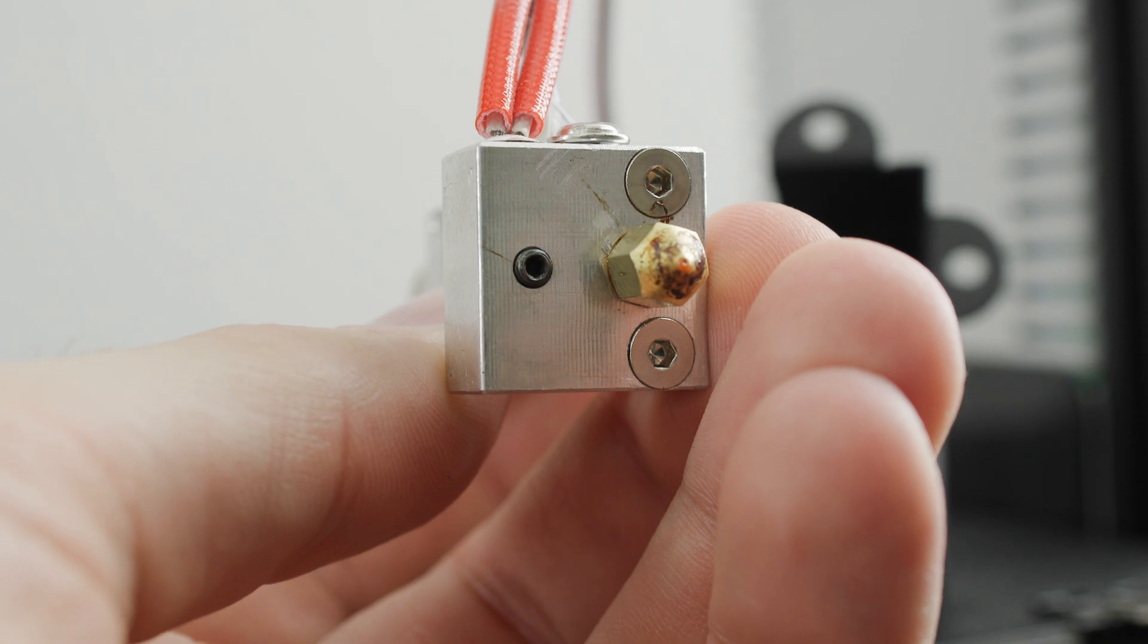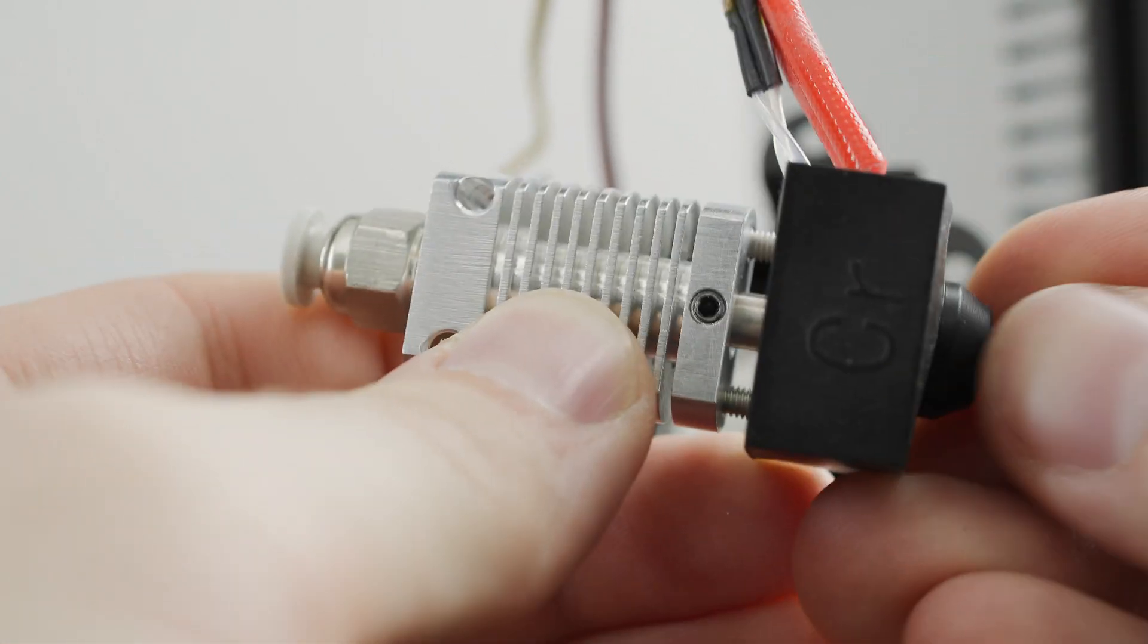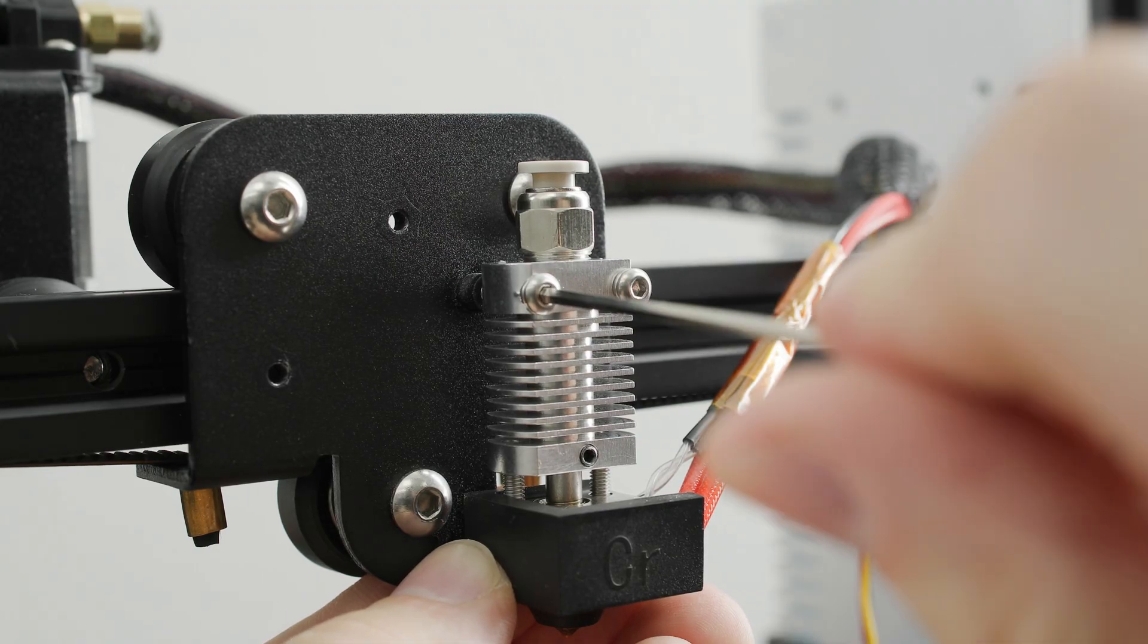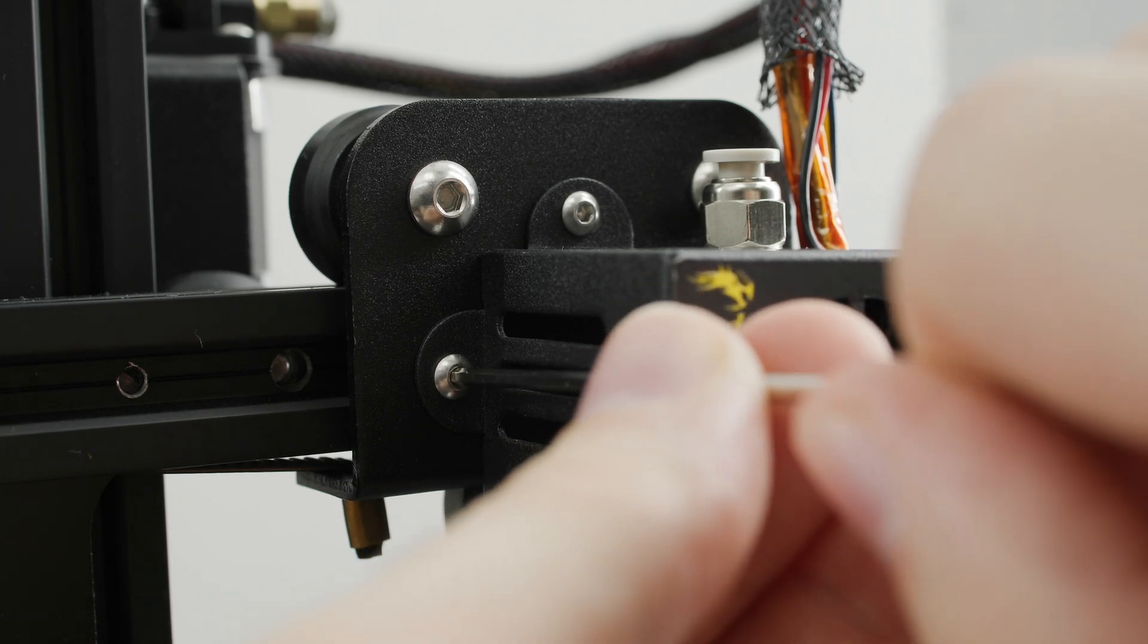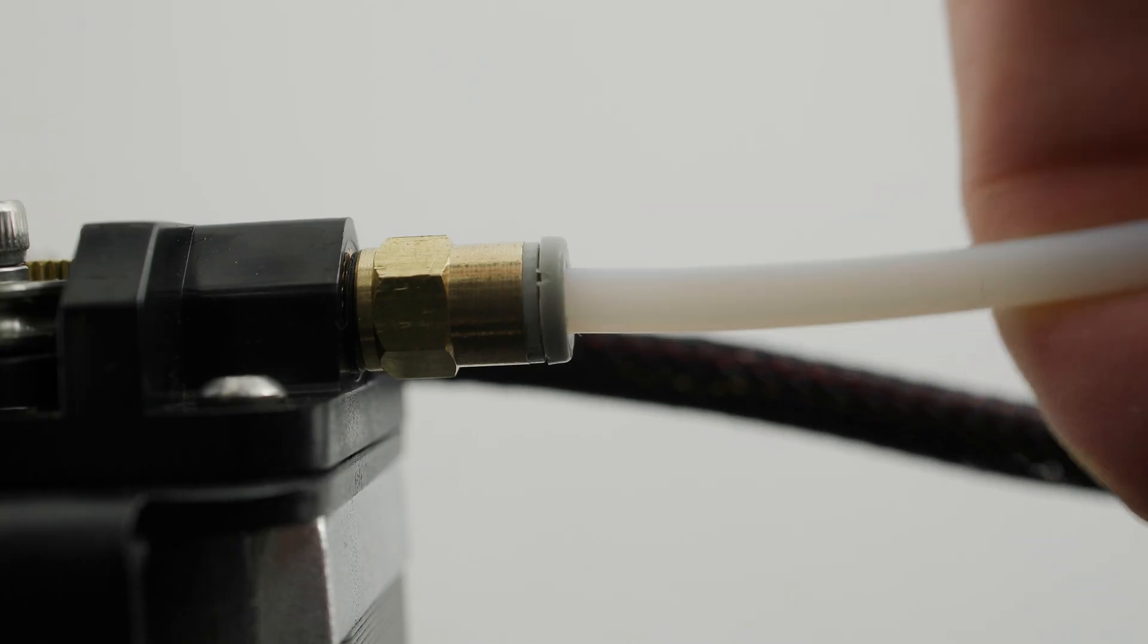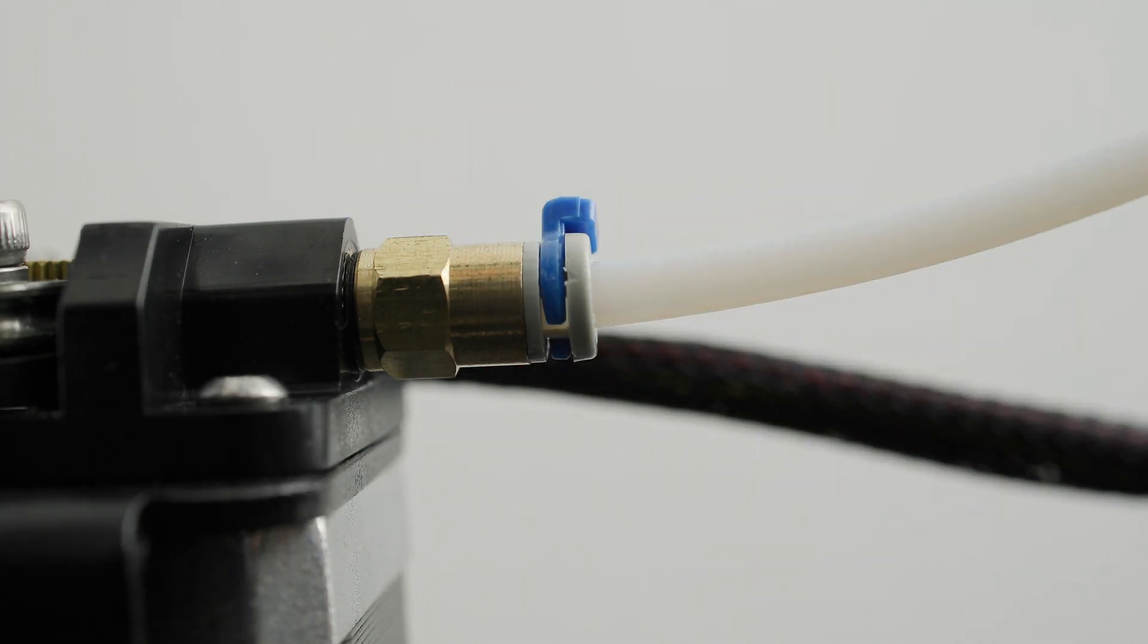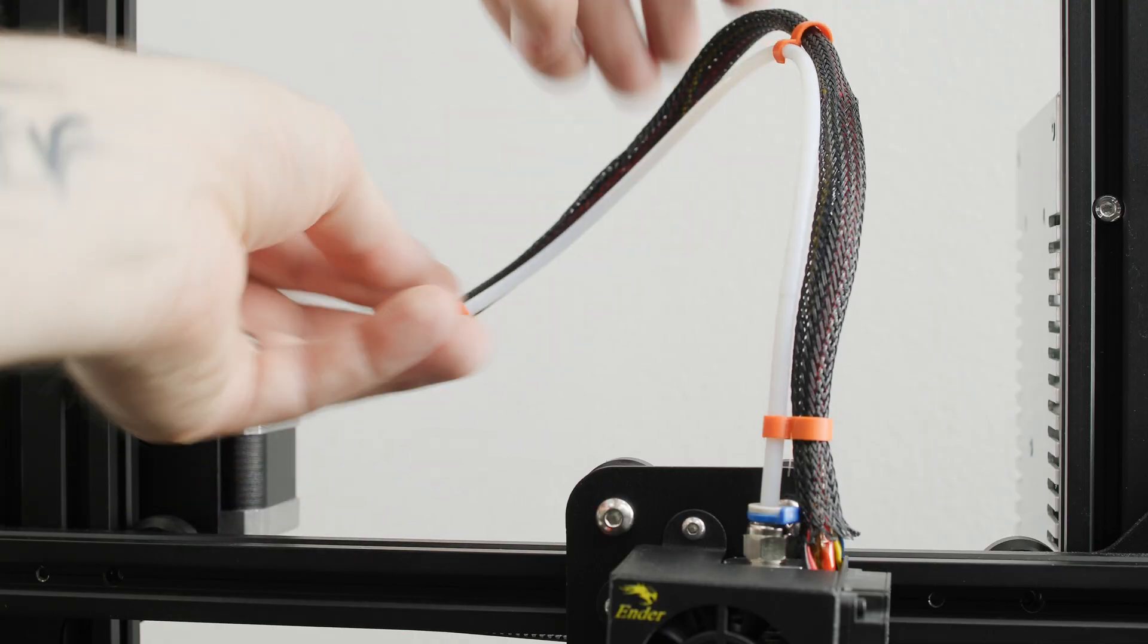Now all we have to do is put everything back together. Put the silicone sock back on. Attach the hotend to the X-axis carriage. Fasten the hotend cover back on. Slide the PTFE tube back into the hotend and secure with the lock. Insert the PTFE tube back into the extruder and secure with the lock. Finally, connect the PTFE tube together with the wires leading to the hotend.